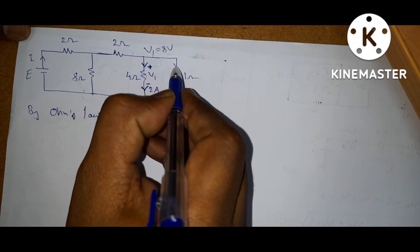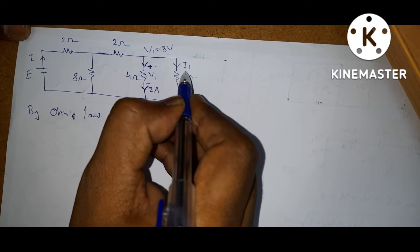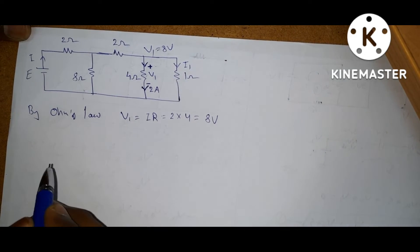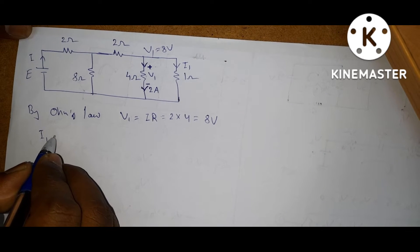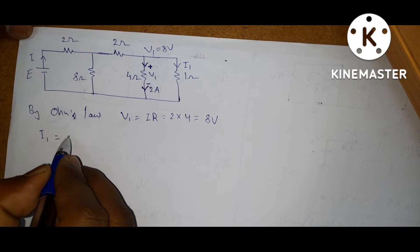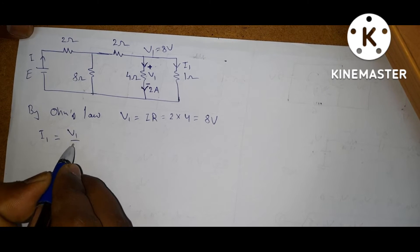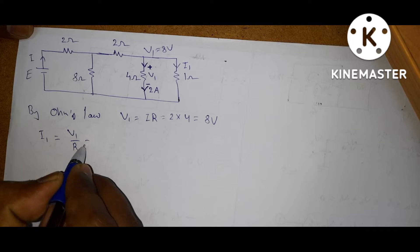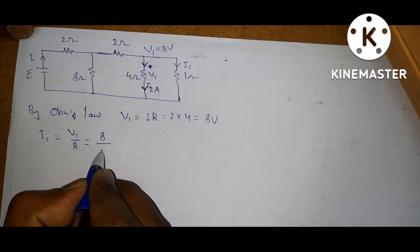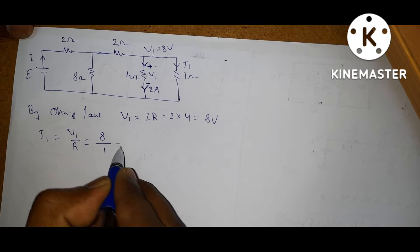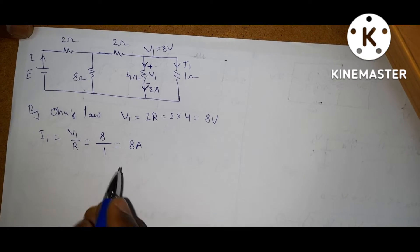Let the current flowing through the 1 ohm be I1. What is I1? I1 is equal to, according to Ohm's law, V1 by R. V1 is 8 volts and resistance is 1 ohm, so you get 8 amps.